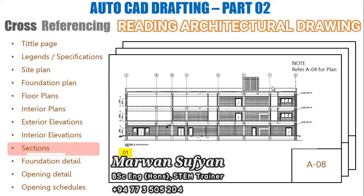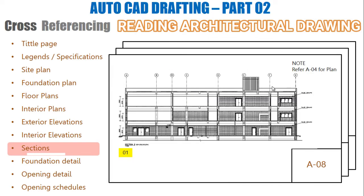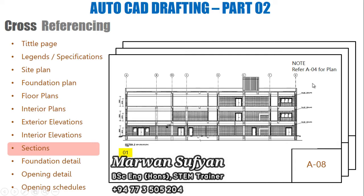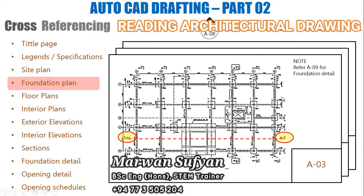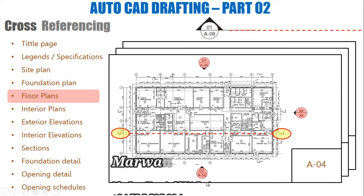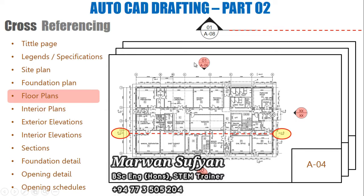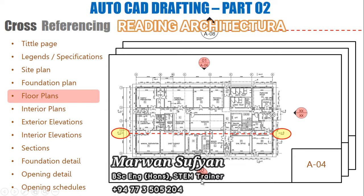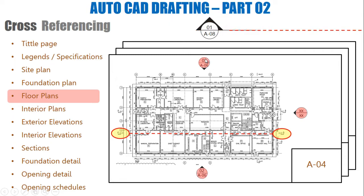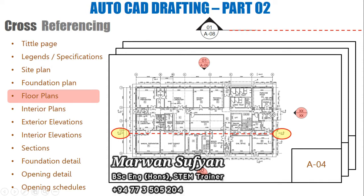Checking A08 — this drawing sheet has only one view, which is view number one. In this section cut drawing there's a note that says 'refer A04 for plan,' so we can go back to the plan. One more thing to note here are the elevation symbols. Looking at the front elevation and rear elevation, they are both in sheet number A06. One is named view number one and the other view number two.